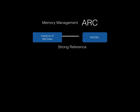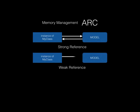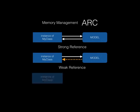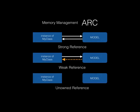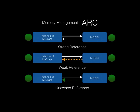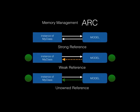You've got strong references — where two objects each retain each other — and weak references where one is the owner and the other just references. With two strong references, flushing one won't deallocate because the other still holds it, creating a memory leak. With weak, if you release your class it will immediately deallocate because the back-reference from the model is weak.